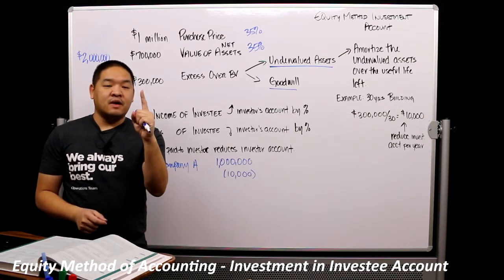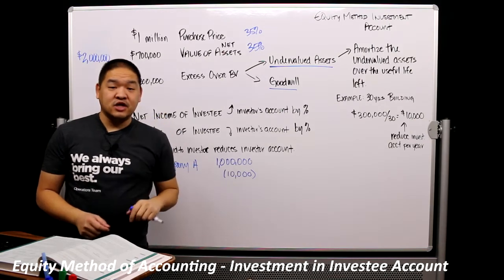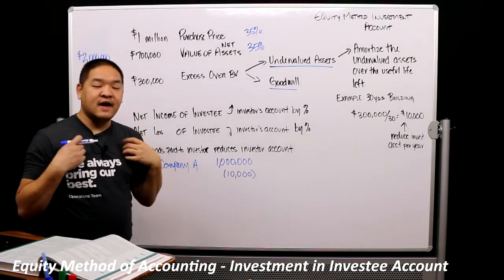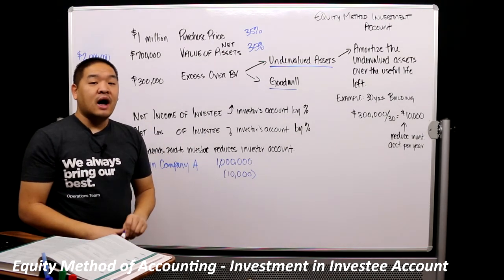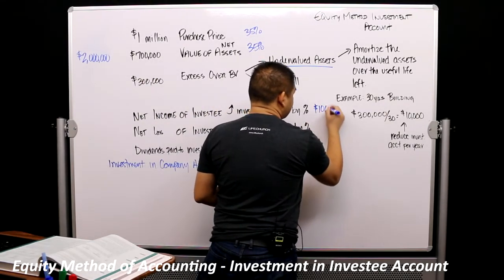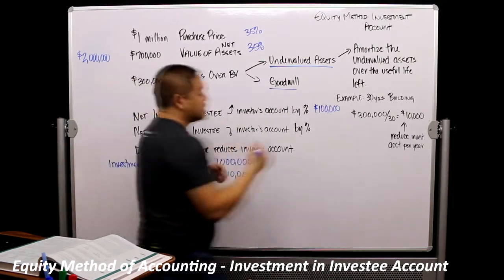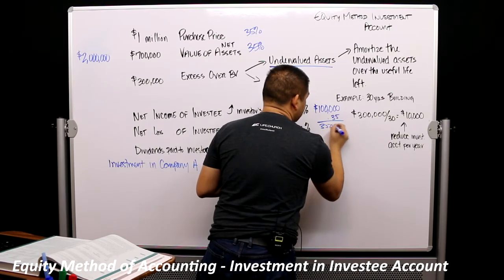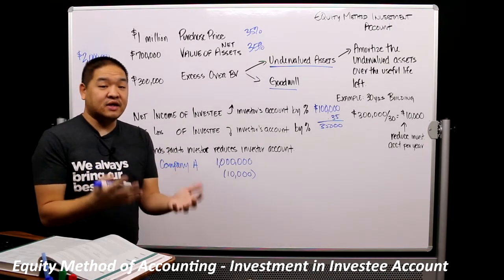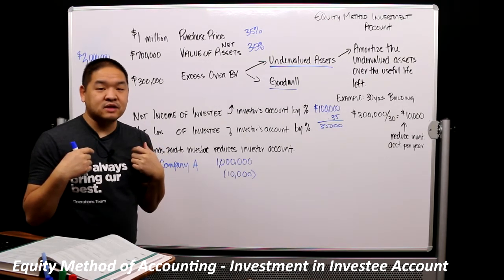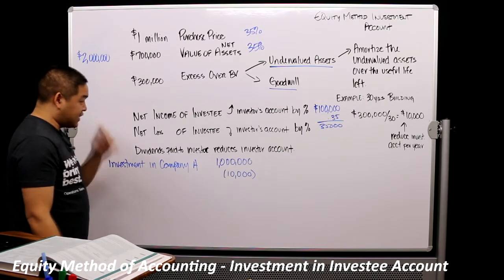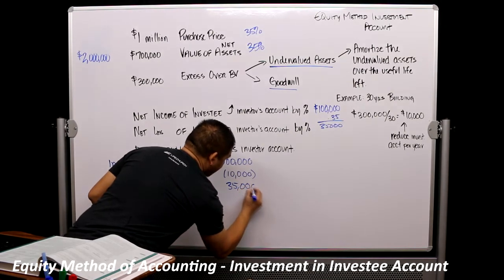The other two entries we're going to make: one for net income or loss from the investee, and one for dividends. Under the equity method, if there is net income in the investee, we increase our investment account by our proportion of that income. Let's assume company A has net income of $100,000 for the year. Because we own 35% of it, we multiply by 35% and get $35,000. It's as if we made $35,000, and so under the equity method we increase our investment in company A by $35,000.